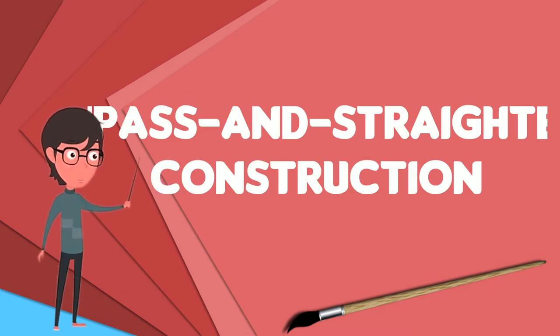Compass and straightedge construction, also known as ruler and compass construction or classical construction, is the construction of lengths, angles, and other geometric figures using only an idealized ruler and compass.